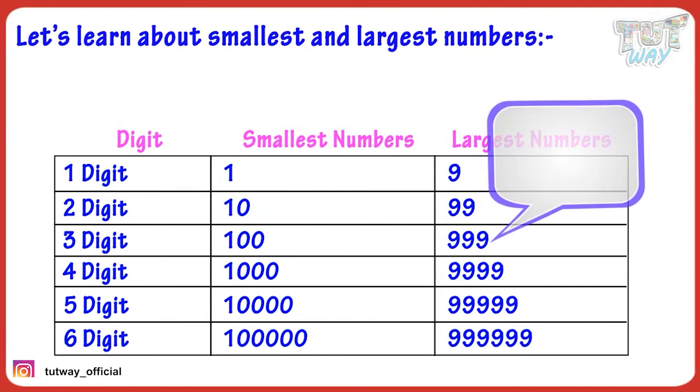And if you add 1 to the biggest three-digit number, you get the smallest four-digit number.